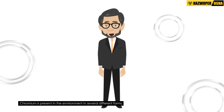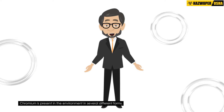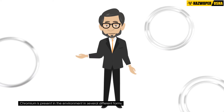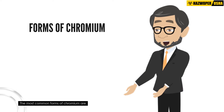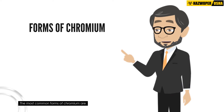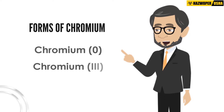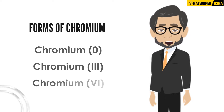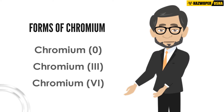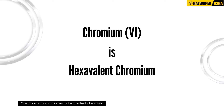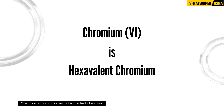Chromium is present in the environment in several different forms. The most common forms of chromium are chromium 0, chromium 3, and chromium 6. Chromium 6 is also known as hexavalent chromium.